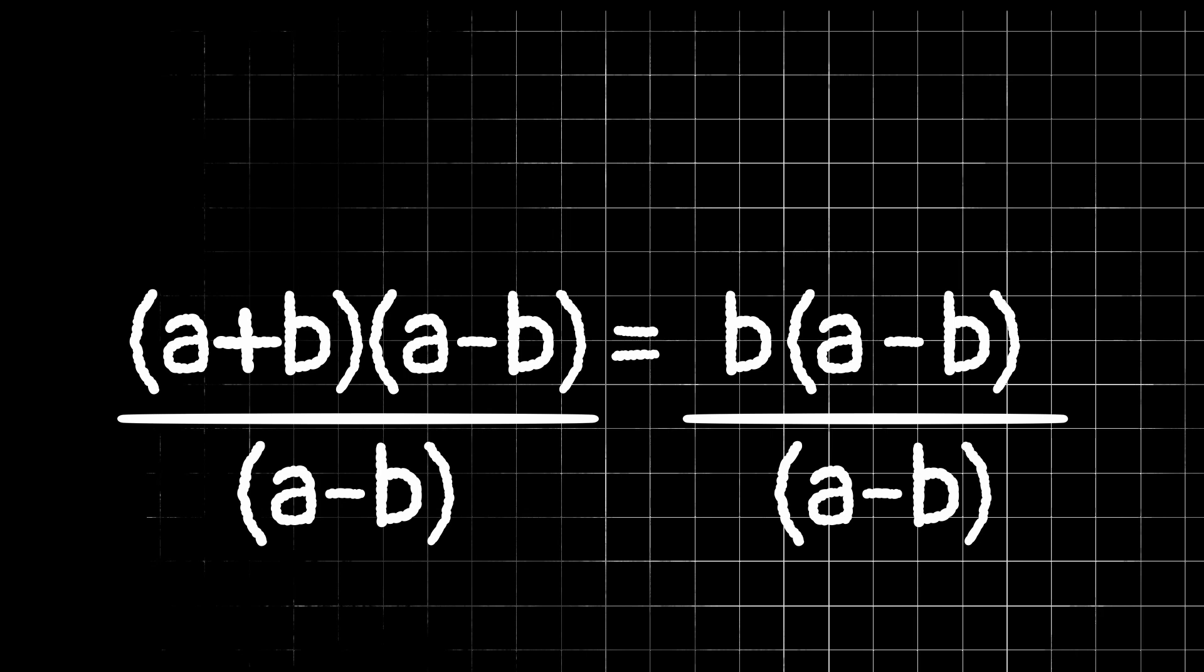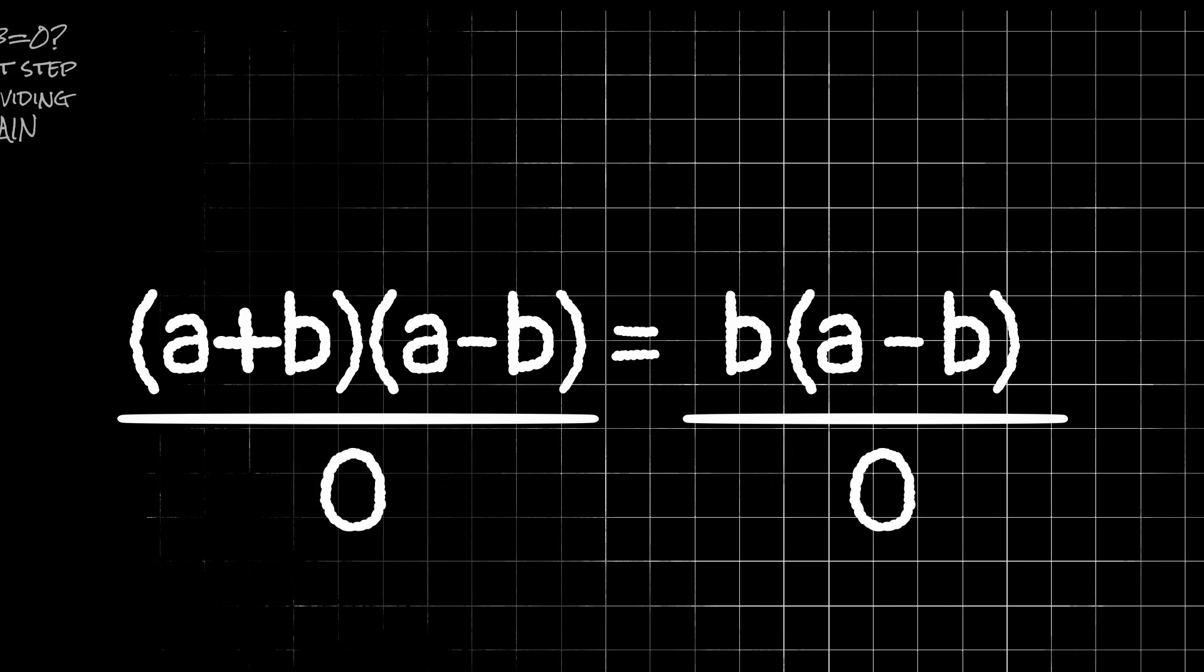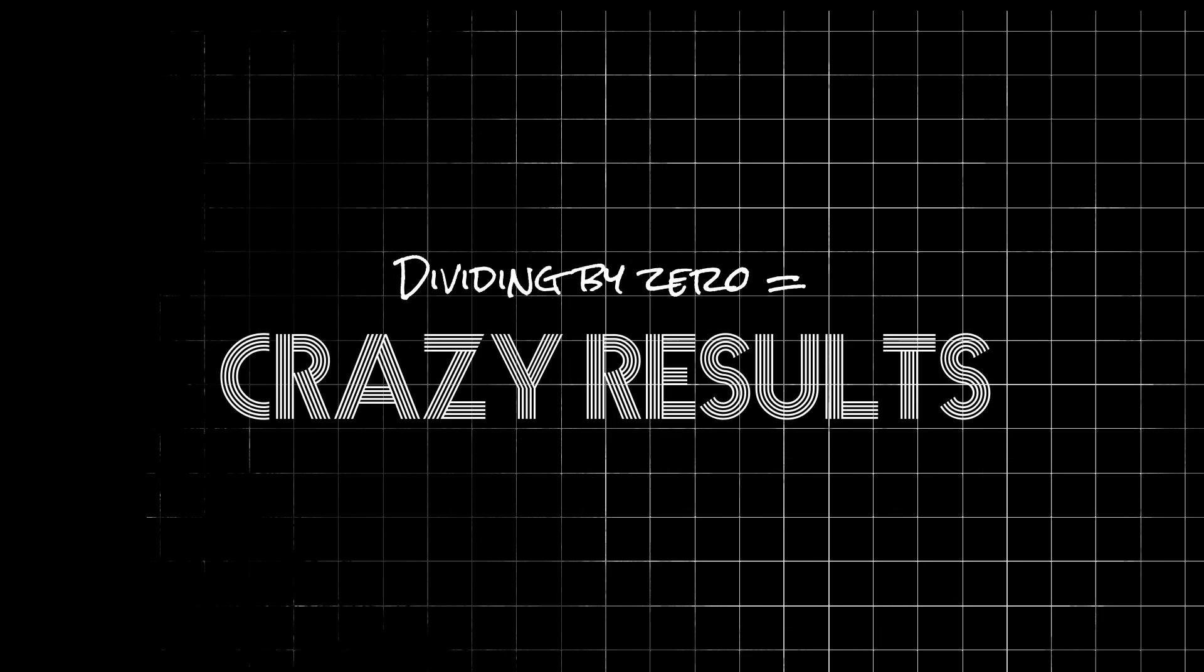So look back at this step here where we divided by a minus b. We were really dividing by 0. We just didn't notice it because it wasn't written as a 0. It was written as a minus b. This is just one example of how dividing by 0 can end up with some crazy results.